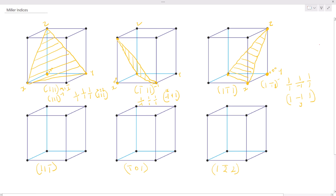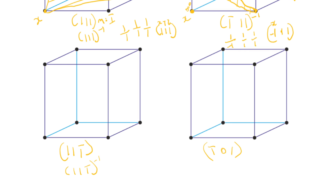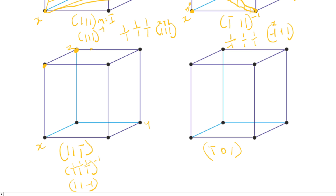For (11-1), we do the inverse: one over one, one over one, one over negative one, giving us one, one, negative one. Our Z is negative, so we travel downwards — we pick the top for our origin. This is our Z, Y, and X. From the origin: X is one, Y is one, and Z is negative one. We draw the plane looking in the downward direction.